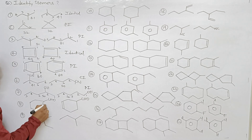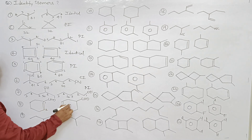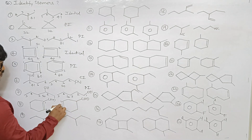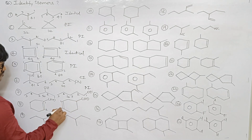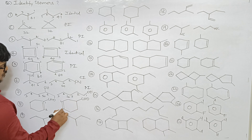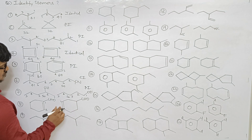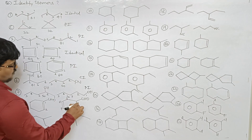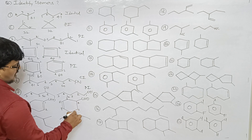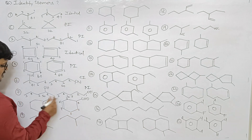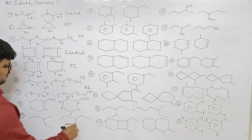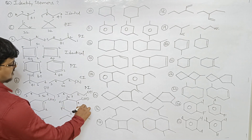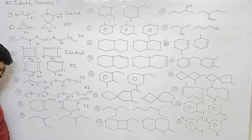Next one: counting positions — one, two on first structure; one, two, three, four, five, six on second. Positions differ. Hence these two are positional isomers.